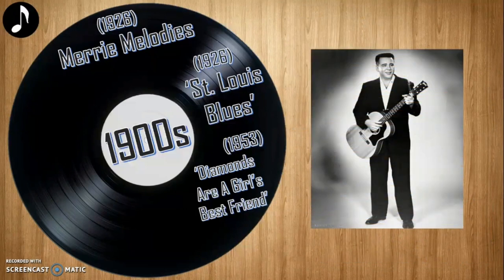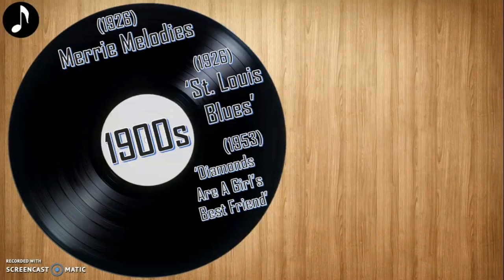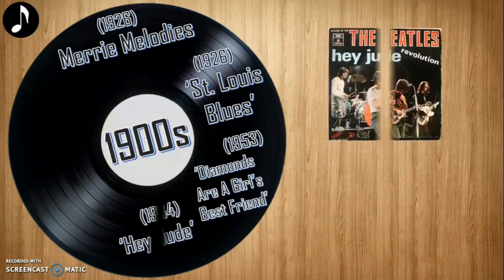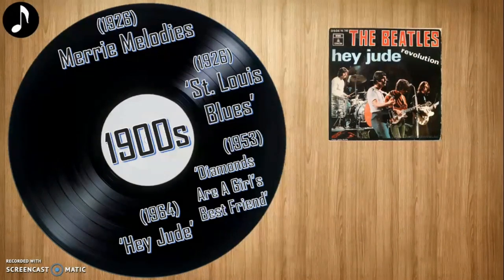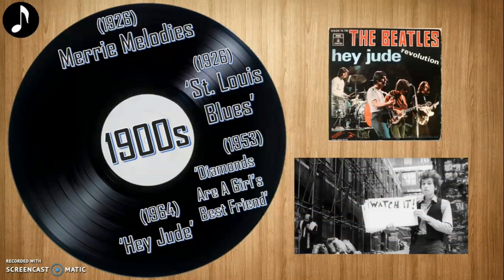Moving into the 1960s, this was the start of visual innovation as artists started experimenting with their music videos. An example of this is 'Hey Jude' by The Beatles in 1968 — a simple performance music video but shot from different angles. Another music video with innovation was Bob Dylan's 'Subterranean Homesick Blues' in 1965, which was an early version of a lyric video.